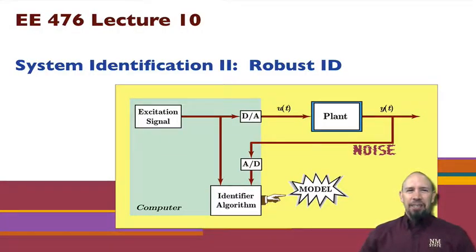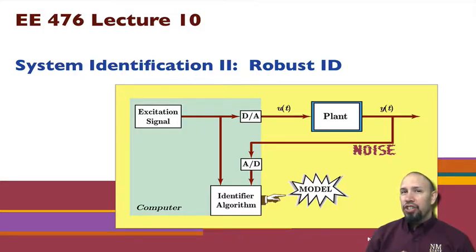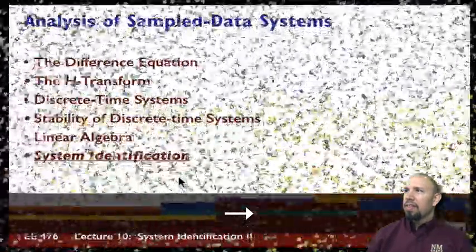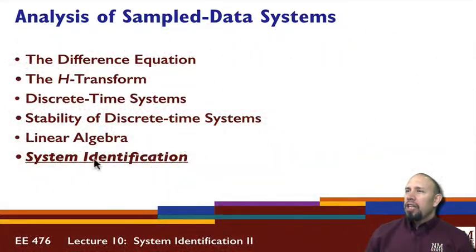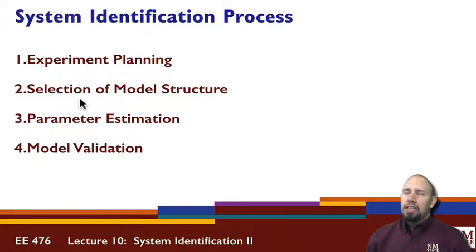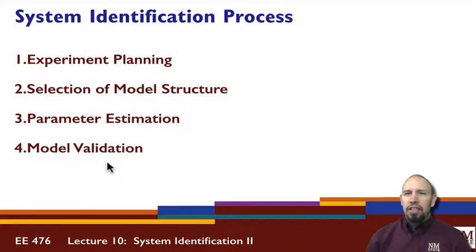Hi, and welcome to lecture number 10. In this lecture, we're continuing our discussion on System Identification. This is part 2 in the System Identification series. We've talked about the four steps of the System Identification process: Experiment Planning, Selection of the Model Structure, Parameter Estimation, and Model Validation. We've gone through all of those for the basic case.